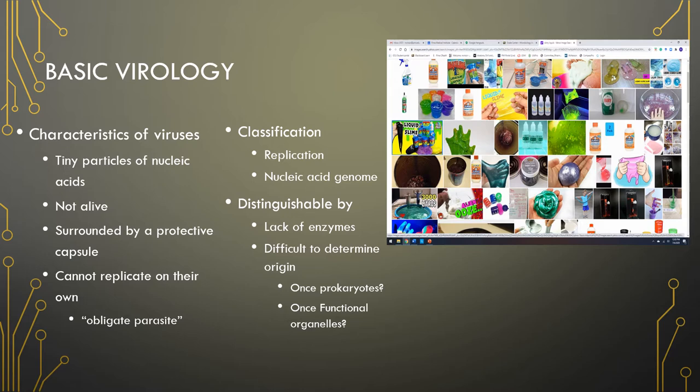RNA viruses are special viruses called retroviruses. An example of a retrovirus is the human immunodeficiency virus, HIV. Viruses do not produce any ability to create their own energy and depend on the host cell for that. Also, scientists haven't been able to find any fossilized viruses, so it's hard to know where they come from, but they have some theories — or let's say, guesses.